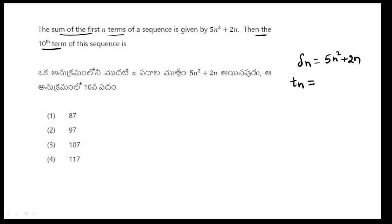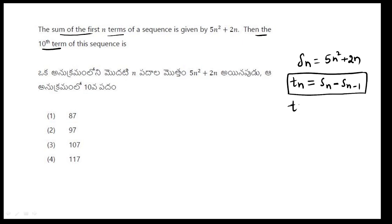So, sum of n terms is given, and we need to find the nth term. Given sum of n terms, find the nth term.